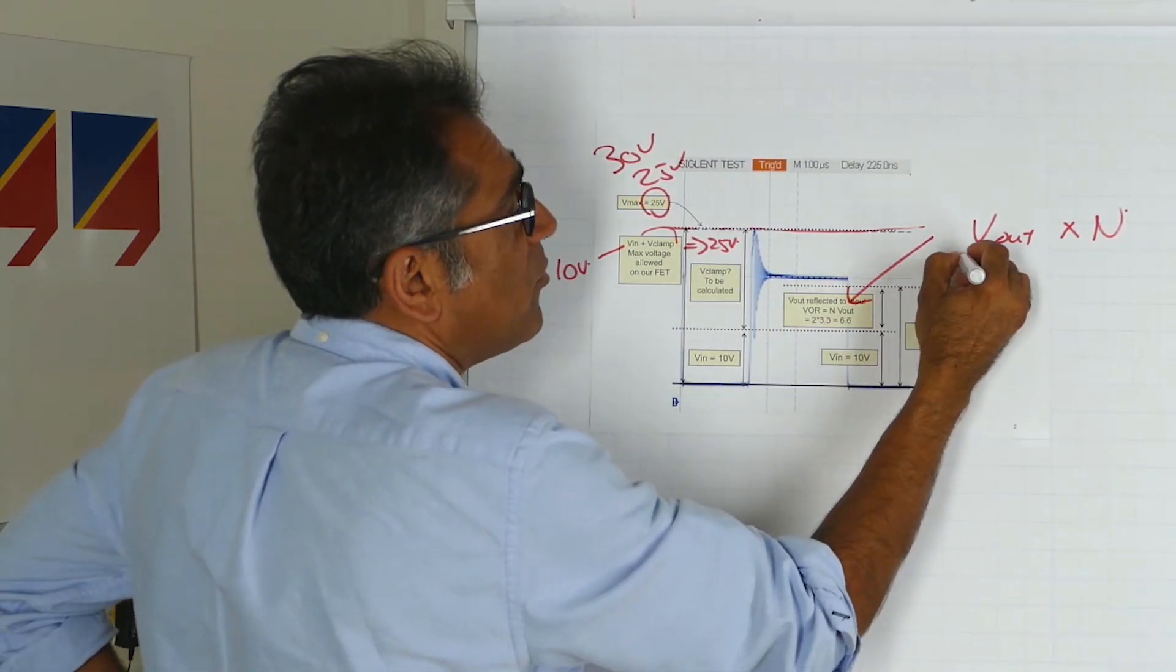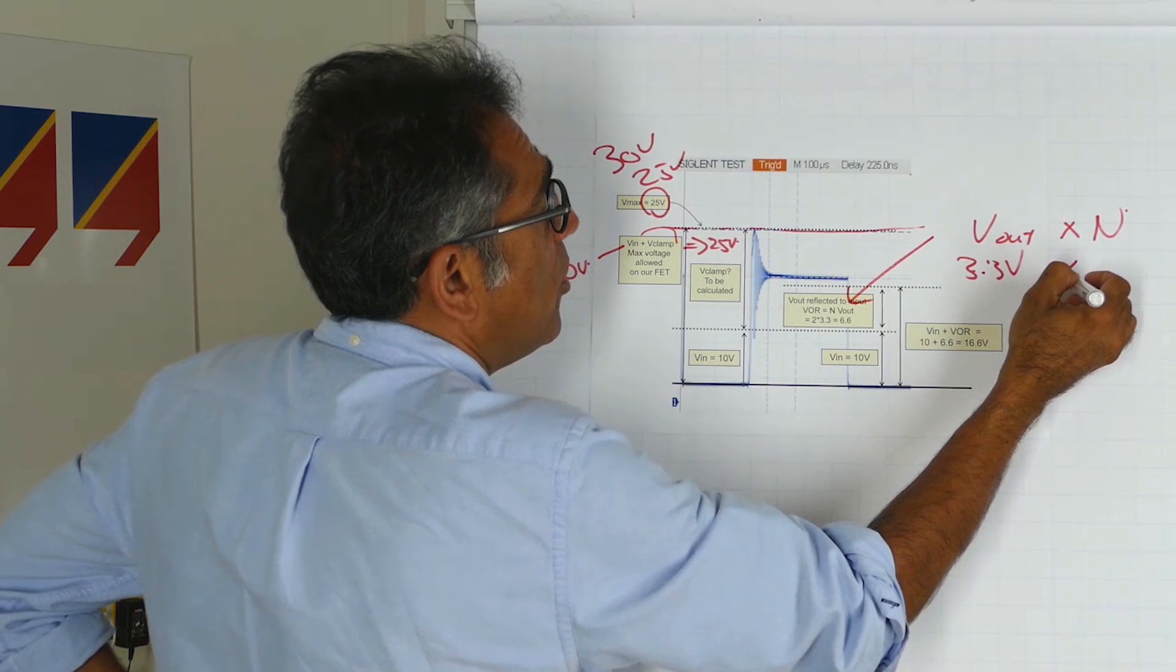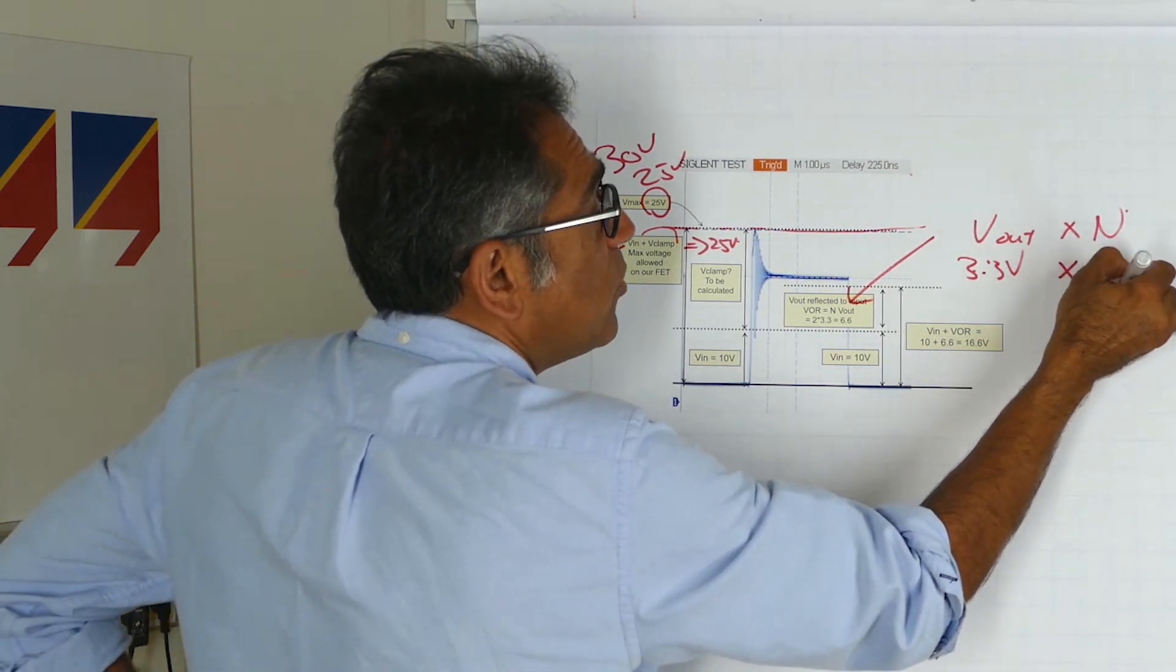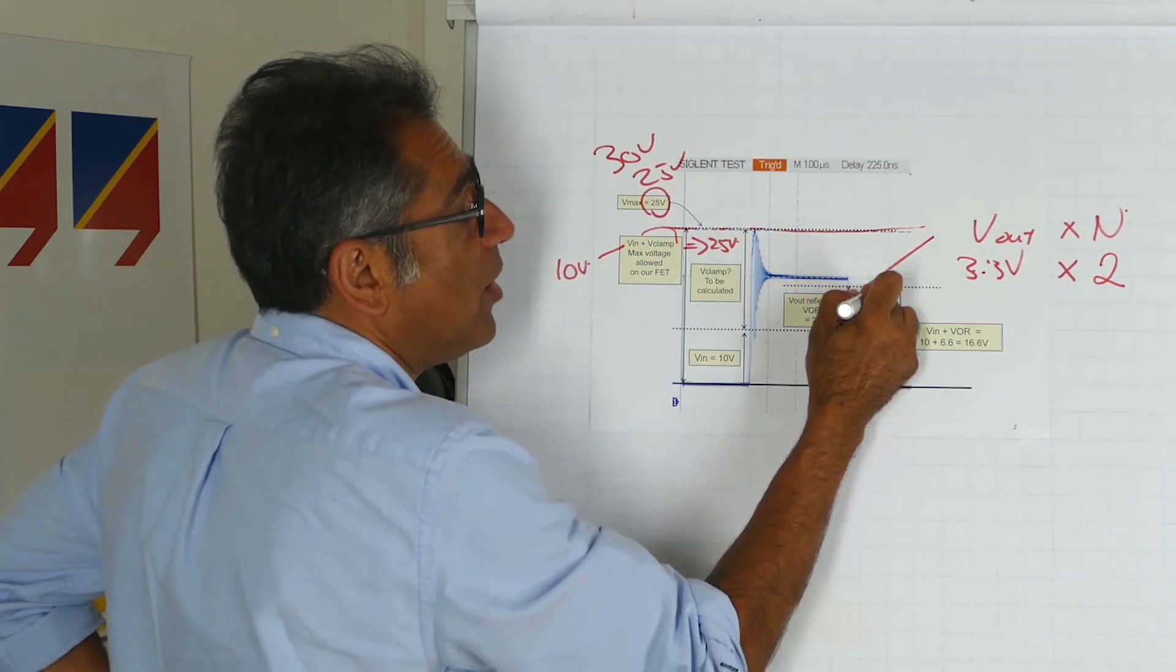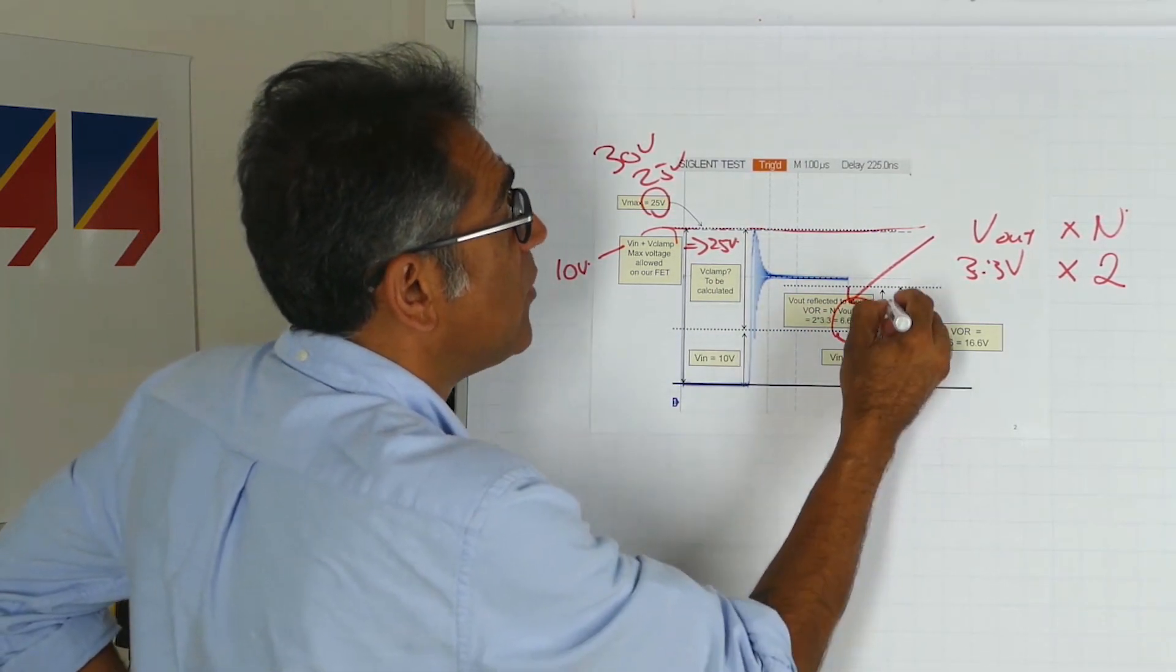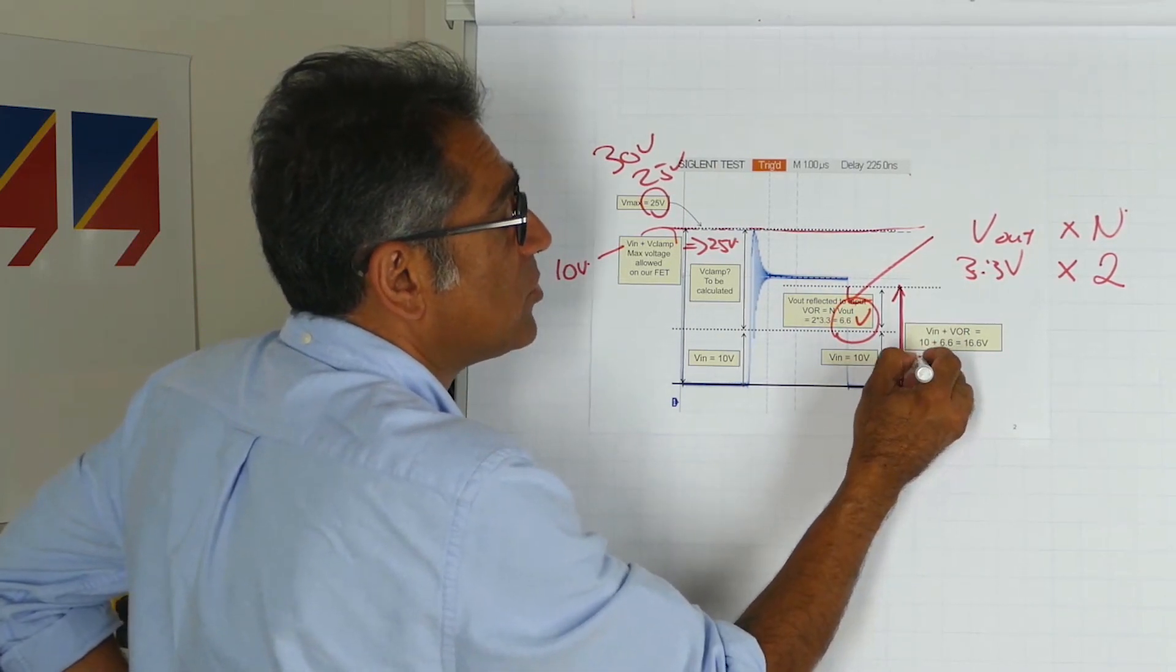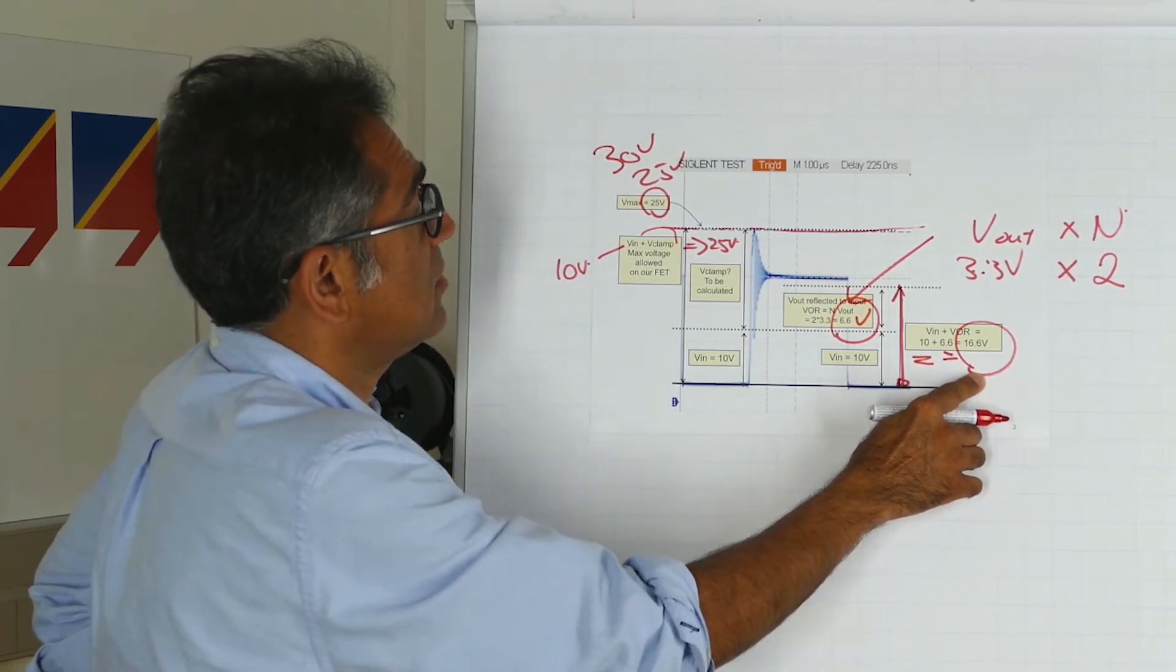Let's say for simplicity that we have got 3.3 volts on the V-out, and let's say we've got a turns ratio of 2 to 1. Therefore, what is reflected or seen on the primary is 6.6 volts.